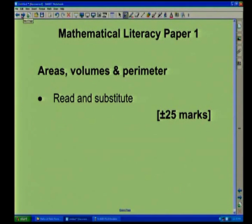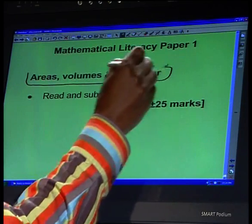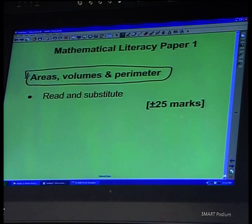Another area again that is important, it also carries more marks. It's areas, volumes, and perimeter. It carries more or less about 25 marks. I always emphasize that it is important for the learners to master the skill of substitution because all the questions that will be asked that requires the formulae, those formulae will always be given. So it's not important to memorize these formulas or the formulae because the formulae will be given. So yours is just to substitute, use your calculator.